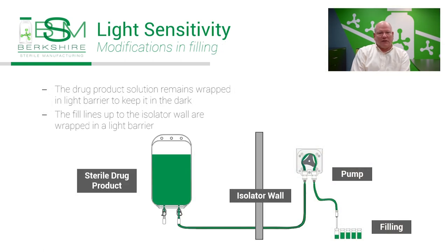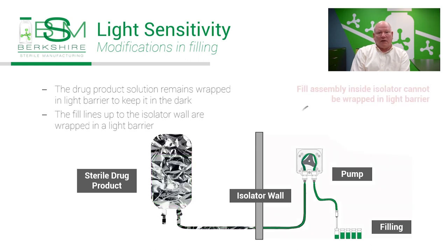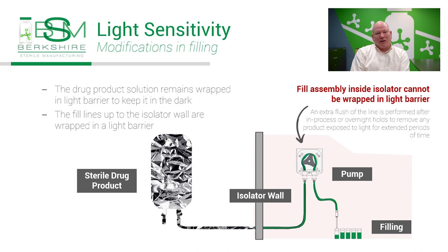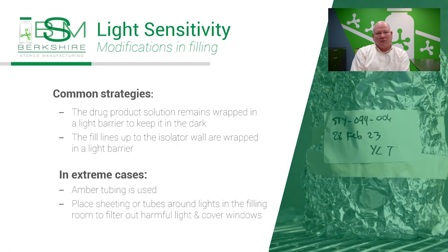During filling, the drug product solution remains wrapped to keep it in the dark, and we also wrap the fill lines up to the point that they enter the isolator. Unfortunately, the fill line inside the isolator cannot be wrapped, and the product may be exposed to light within the isolator. However, the time that it's exposed is very short, and we typically include an extra flush of the line and an in-process or overnight hold to remove any product that was exposed to light for an extended period. Opaque tubing can be used, or the lights in the room and isolator can be adjusted to remove high-energy blue and purple wavelengths.